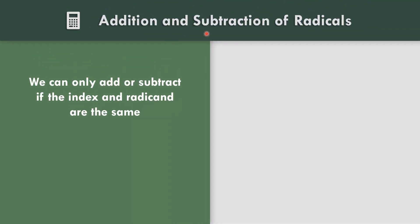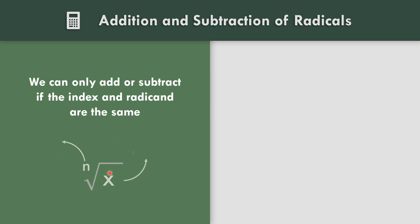In addition and subtraction of radicals, we can only add or subtract if the index and radical are the same. In the notation n-root of x, x is the radical and n is the index.